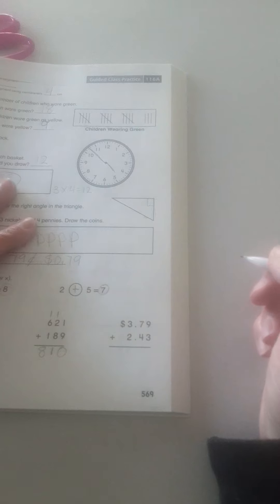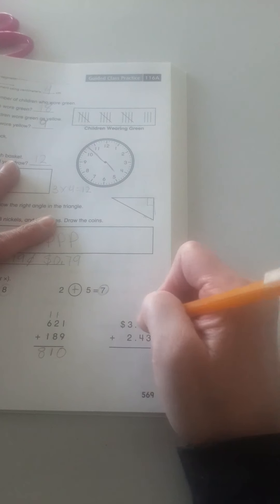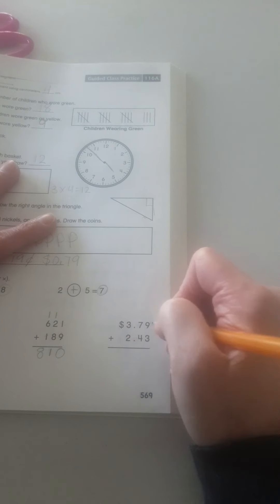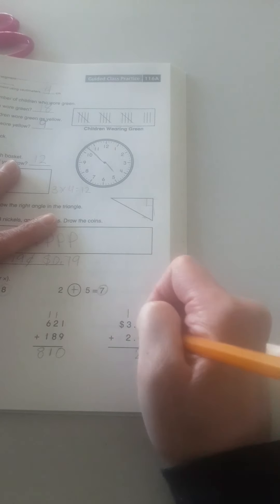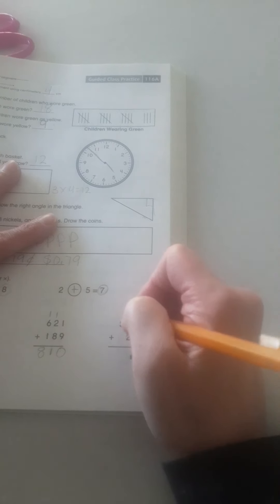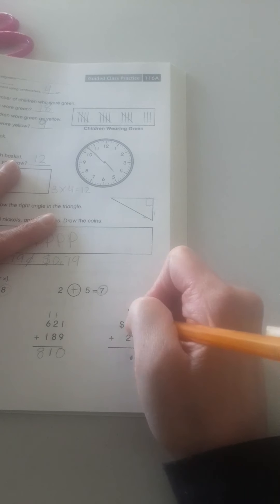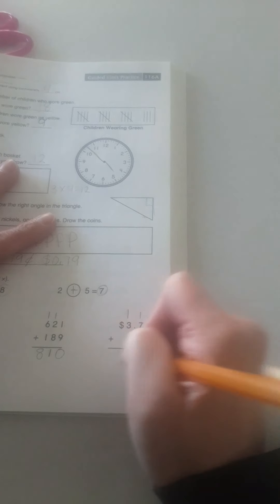My last one I have is money. $3.79 plus $2.43. 9 plus 3 is 12. Carry the 1. Bring down the 2. 7 plus 4 plus 1 is 12. Carry the 1. Bring down the 2. Bring down my decimal point. 3 plus 1 plus 2 is 6. And I need my dollar sign. $6.22.